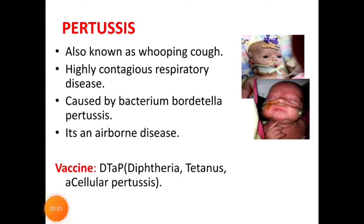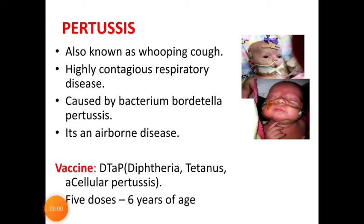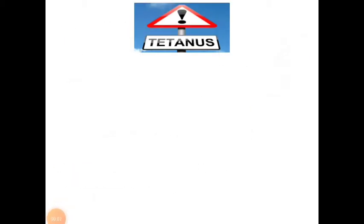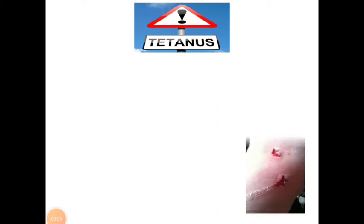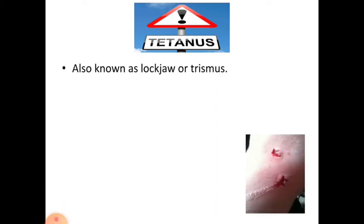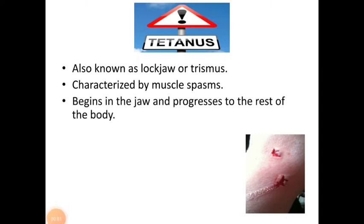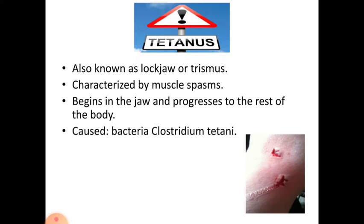DTaP stands for diphtheria, tetanus and acellular pertussis. DTaP vaccinations are routinely given within six years of age. The next disease is tetanus, also known as lockjaw or trismus. It is an infectious disease characterized by muscle spasms. The most common type of spasm begins in the jaw and then progresses to the rest of the body.